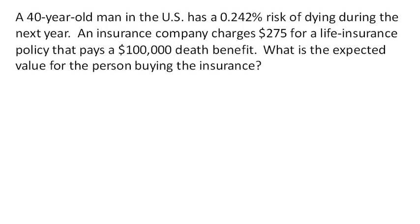A 40-year-old man in the US has about a 0.242% risk of dying during the next year. An insurance company charges $275 for a life insurance policy that pays a $100,000 death benefit — that is, it pays if the person dies during the year. Otherwise, the company keeps the $275 and the person doesn't get anything. So what is the expected value for the person buying the insurance?